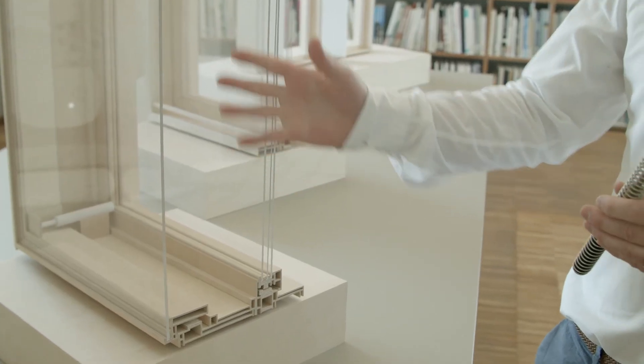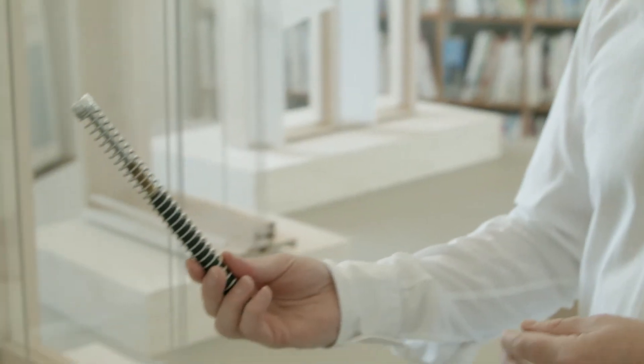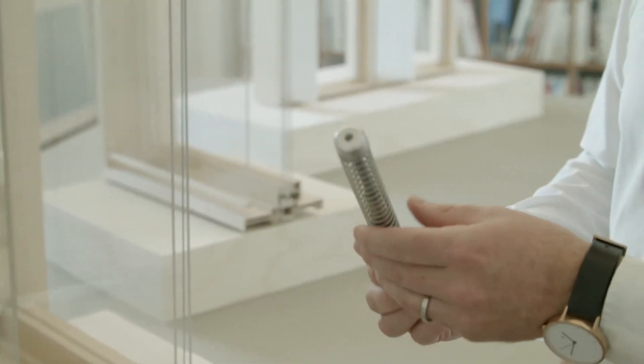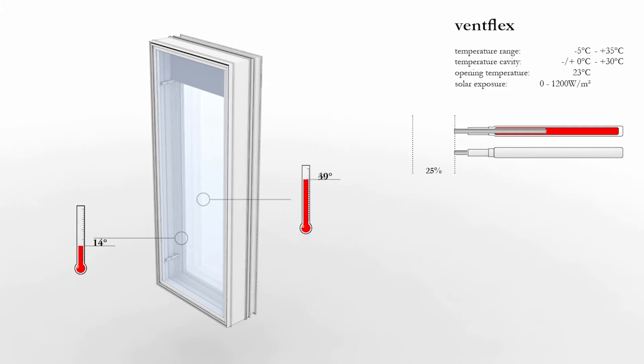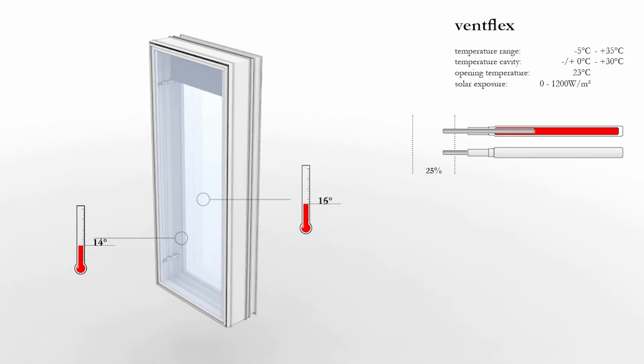This is a model of a double skin facade which is ventilated by an auto-reactive thermal cylinder. This thermal cylinder would push outwards this first skin in order to ventilate the cavity of the facade. This would significantly reduce the thermal loads of the internal spaces.